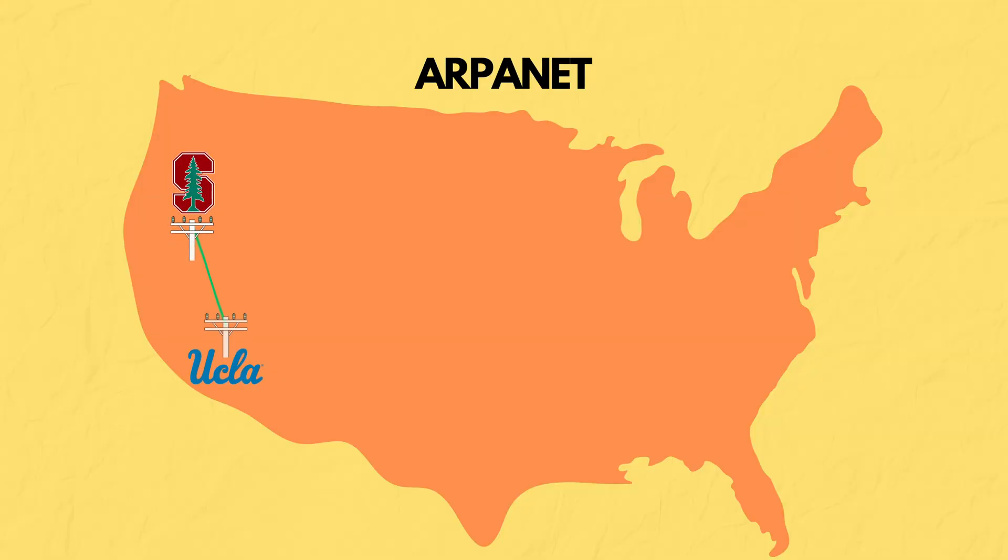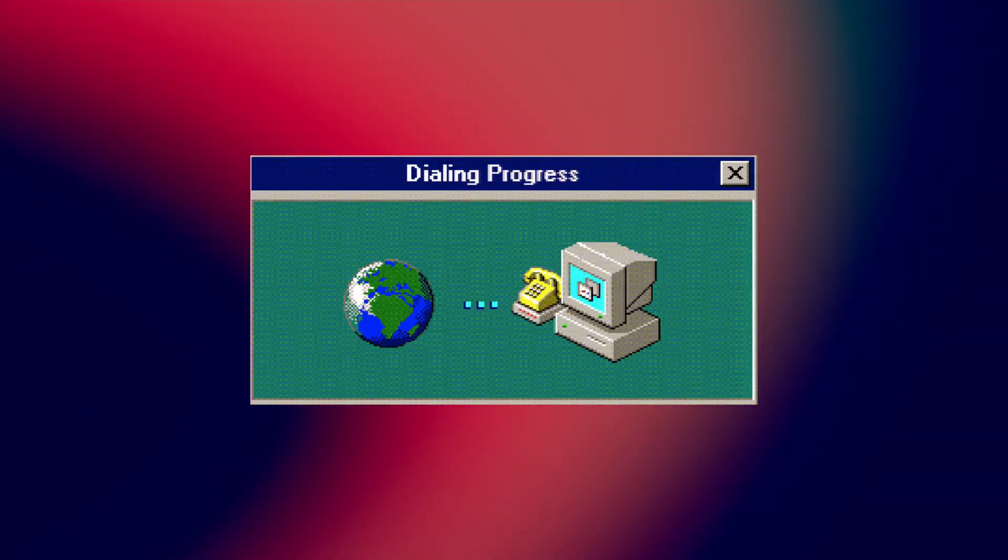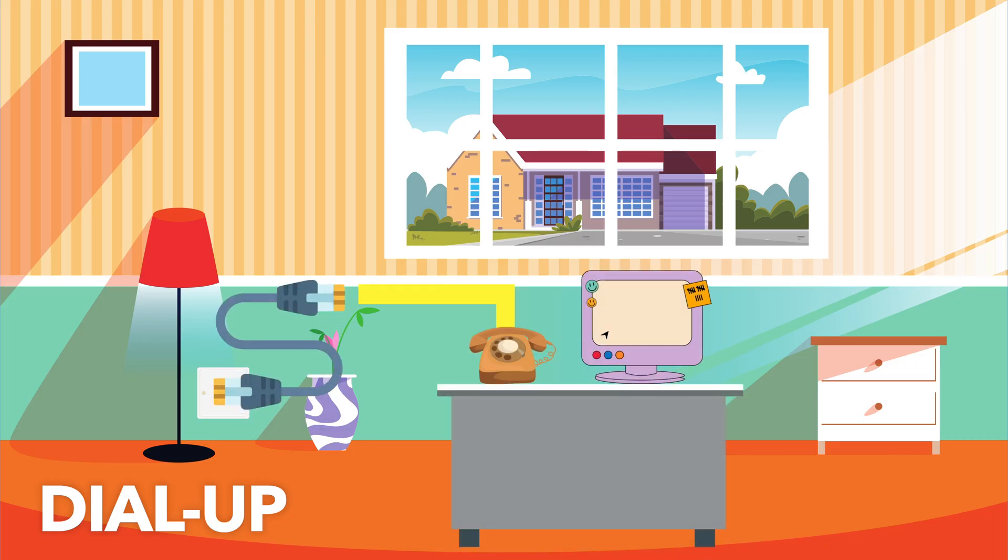And how were these computers able to connect to the internet? The same way the computers at Stanford and UCLA did in 1969. Through phone lines. So enter dial-up internet. Dial-up let people use their home phone lines to connect to the internet. Which also meant that no one in the house could use a phone if someone else was connected to the internet.